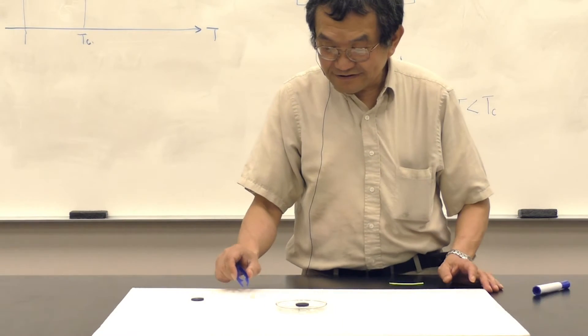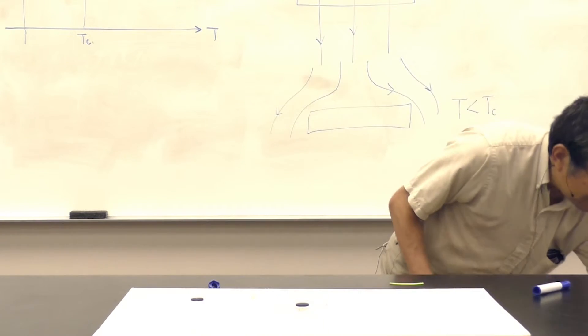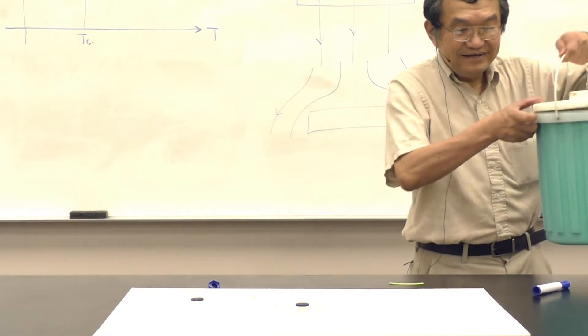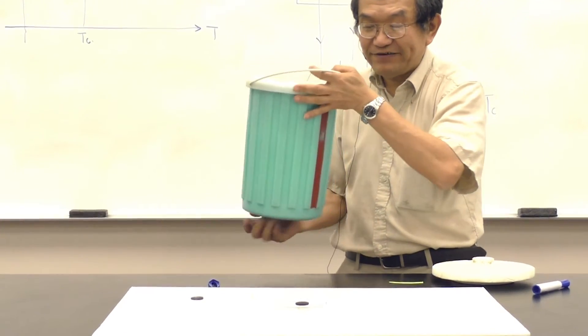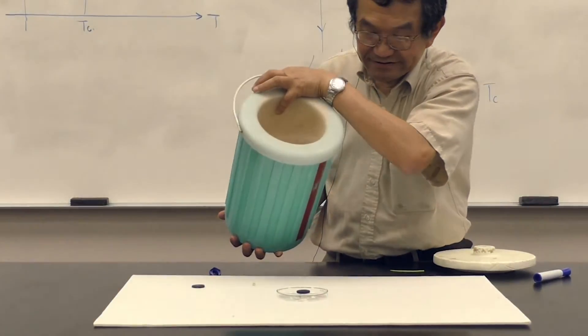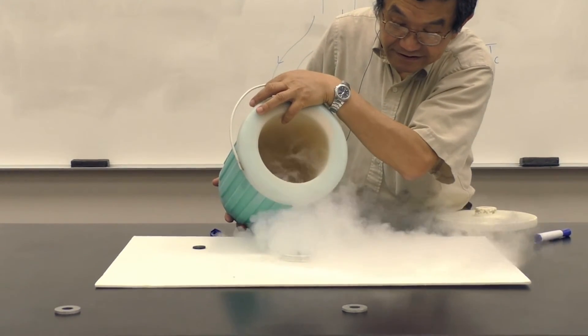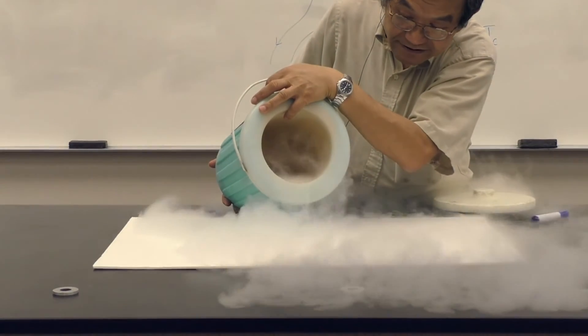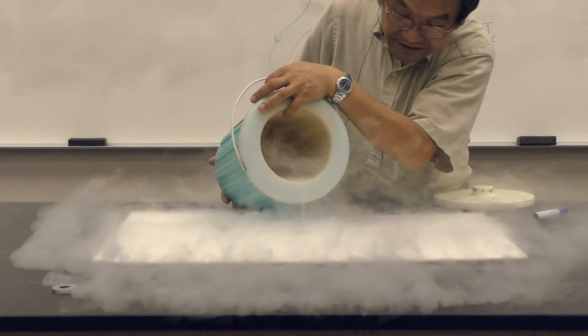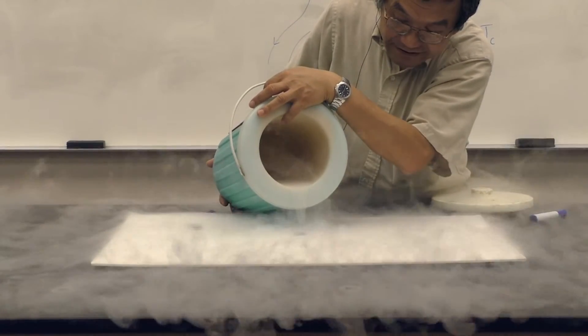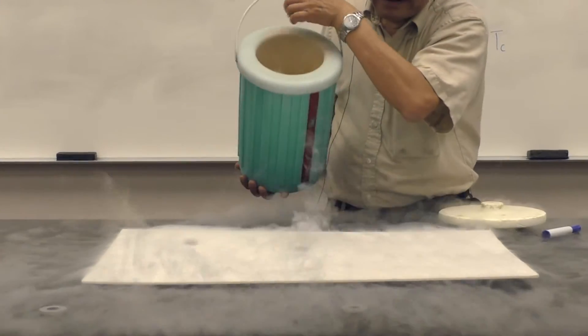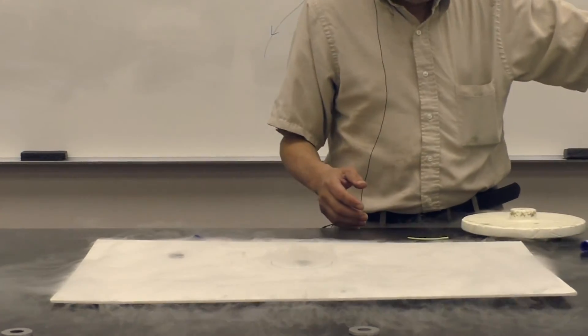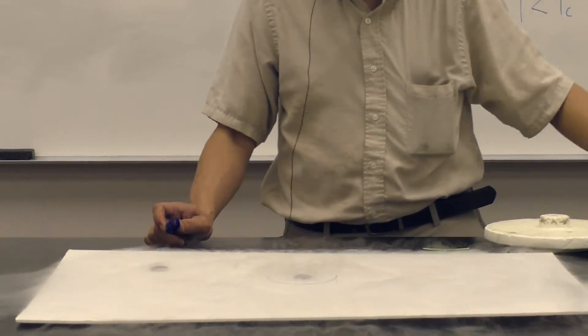And now, if I pour liquid nitrogen into the petri dish, liquid nitrogen has a boiling point of 77 K. And it will be boiling because the temperature is above the boiling point. And after some time, everything will be cooled down.